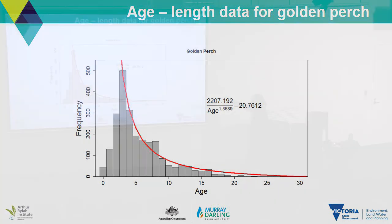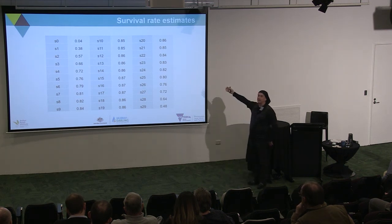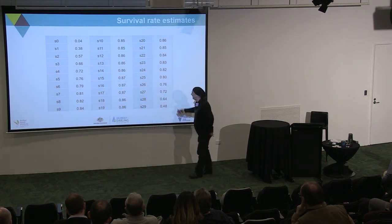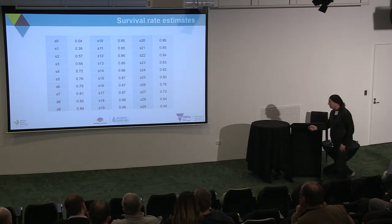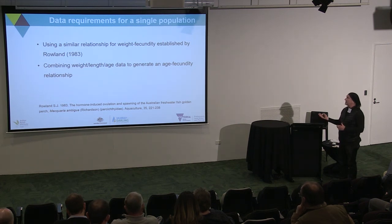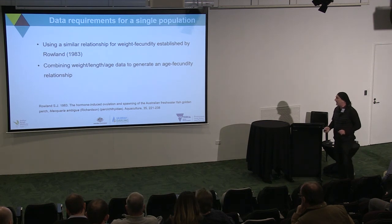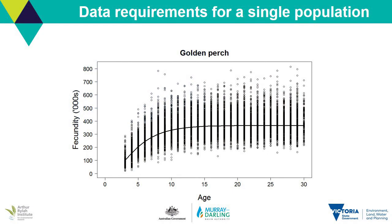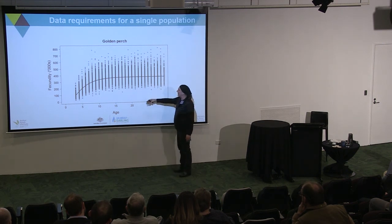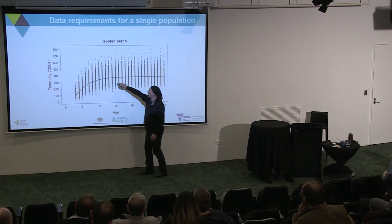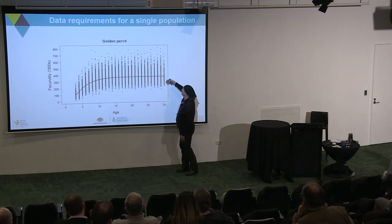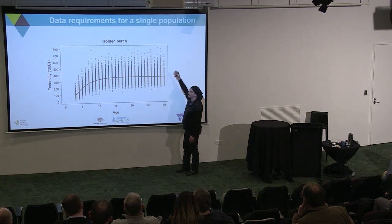We have a bunch of age data, fit a curve to it, and come up with some estimates of survival. For a long-lived species, we see that survival increases with age through to the mid-teens and then declines into older age. Using a weight-fecundity relationship that Stewie Rowland published on in the early 80s, and combining weight-length and age data, we come up with an age-fecundity relationship. The average approaches about 400,000 eggs per female, but with variation ranging from 200,000 up to 700,000 eggs.